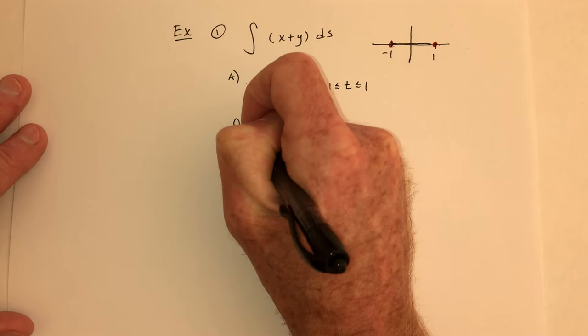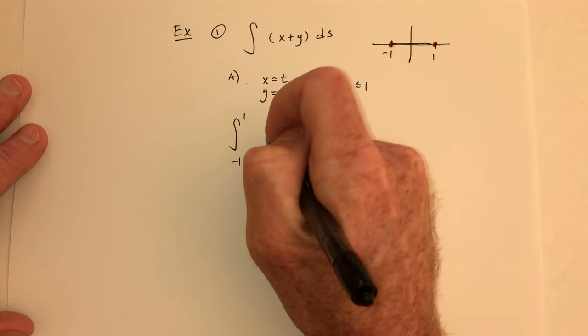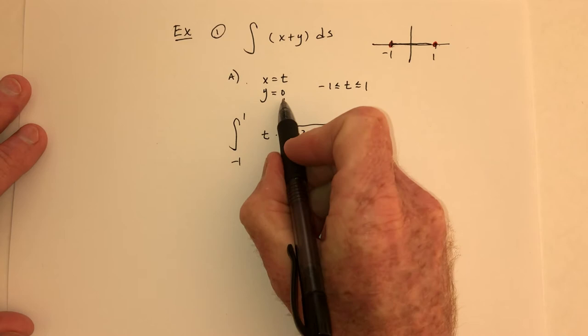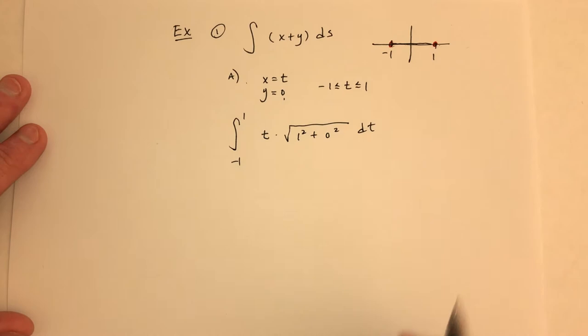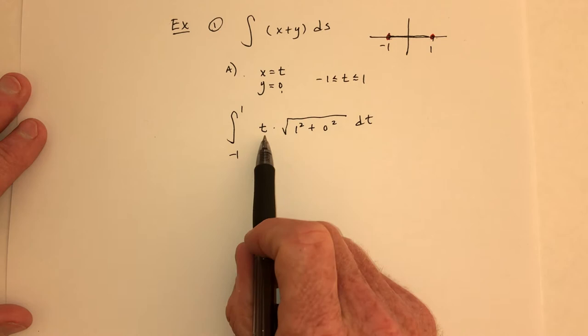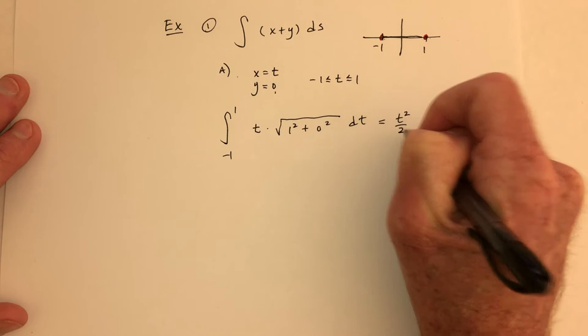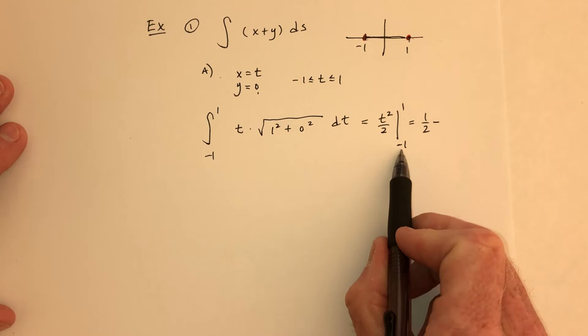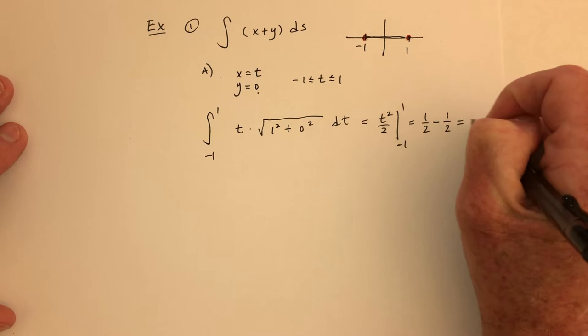Integrate from −1 to 1. Substituting: x + y becomes t + 0. For arc length, the derivative of x = t is 1, squared is 1; the derivative of y = 0 is 0, squared is 0. The square root is just 1. So we integrate t · 1, giving t²/2 evaluated from −1 to 1. That's 1/2 − 1/2 = 0.